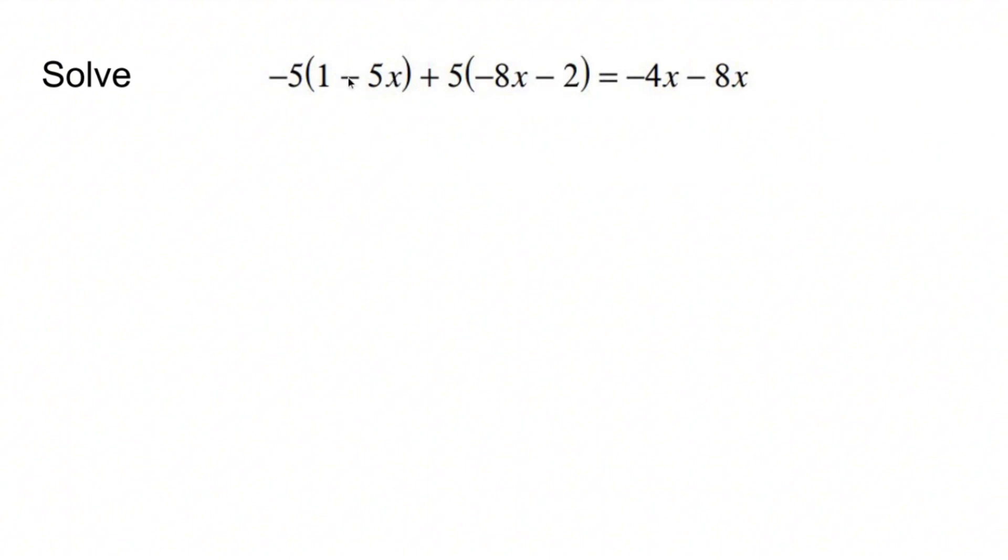So when I see problems that look like they involve distributive property, look like they involve combining like terms, and look like they involve doing stuff from both sides, I always go in this order. Step number one, distributive property. Step number two, combine like terms on each side. And then step number three is get rid of whatever variable that you're dealing with. Then we'll take it from there.